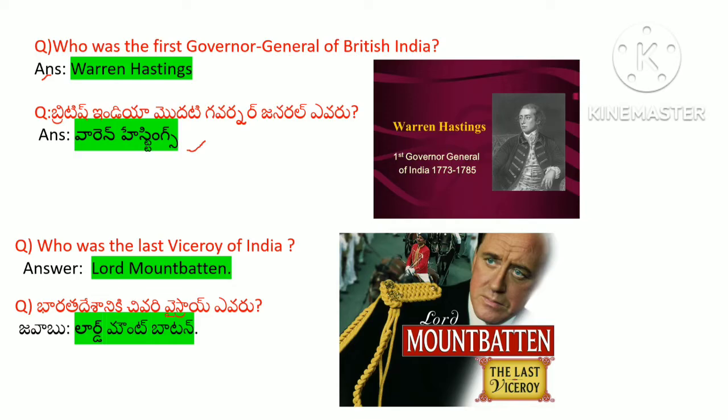Who was the last viceroy of India? The answer is Lord Mountbatten. Lord Mountbatten was the last viceroy of India. India gained independence on 14th August 1947, and at that time Lord Mountbatten was the last viceroy.